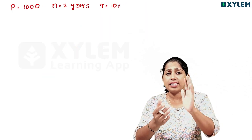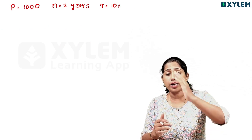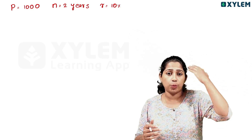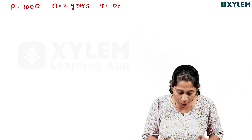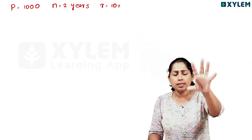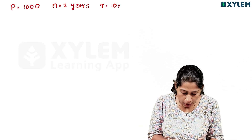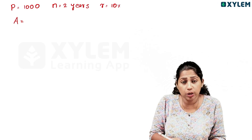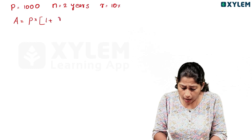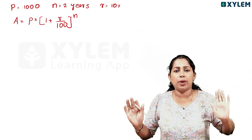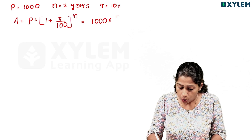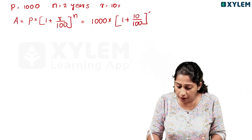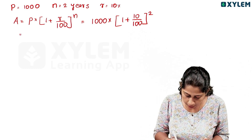Now we are going to learn what compound interest is. We are going to learn the second method. The principal amount is 1,000 rupees, we are going to calculate the compound interest over 2 years, and the rate of interest is 10%. The equation is: total amount equals P into 1 plus r by 100, whole to the power n.